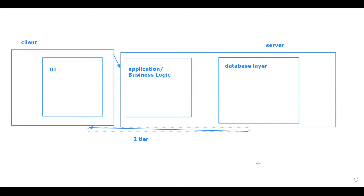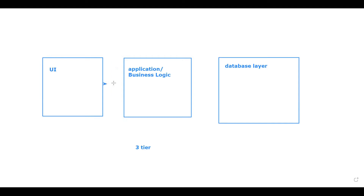In three-tier architecture, the UI first talks to the application layer, and then the application layer speaks to the database layer. Each may be sitting at a different location. The user requests, the application layer further requests the database, the database responds back to the application layer, and the application layer responds back to the user interface. Most of this communication happens over the internet.